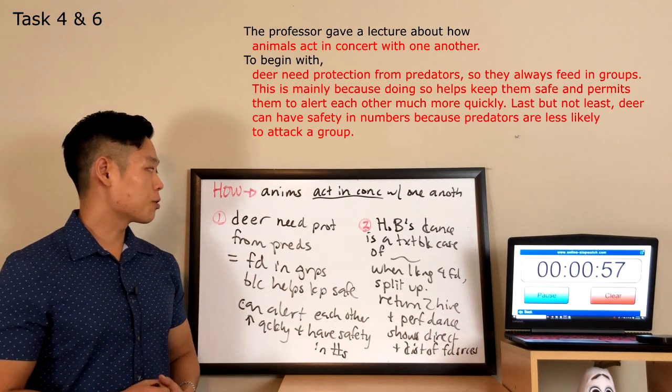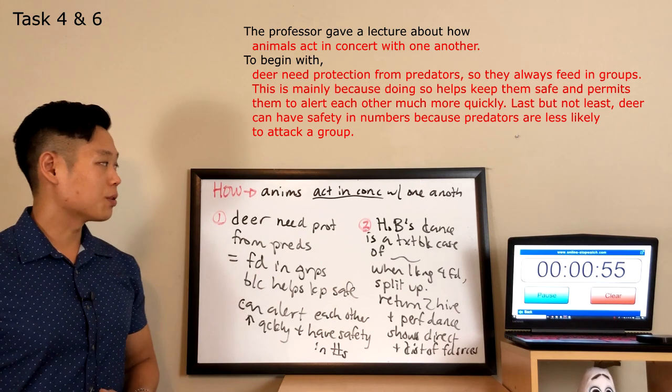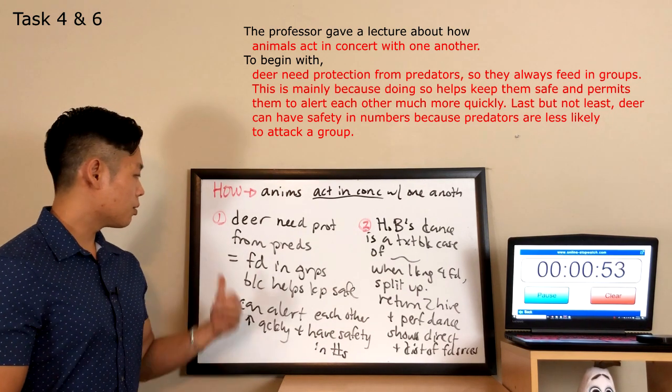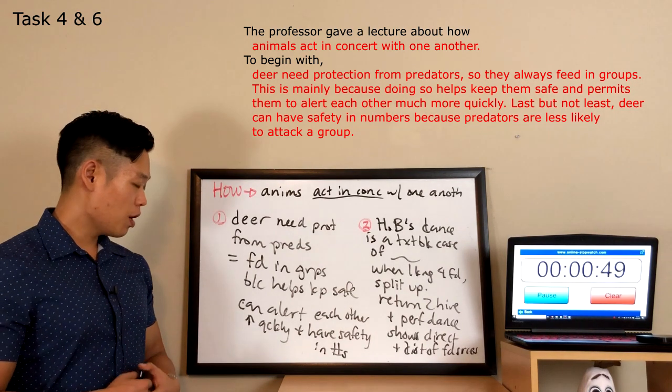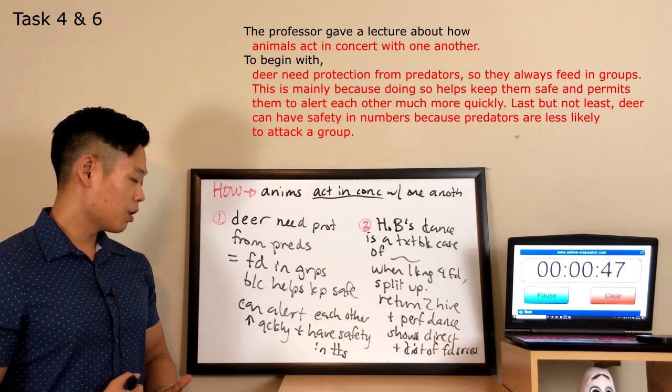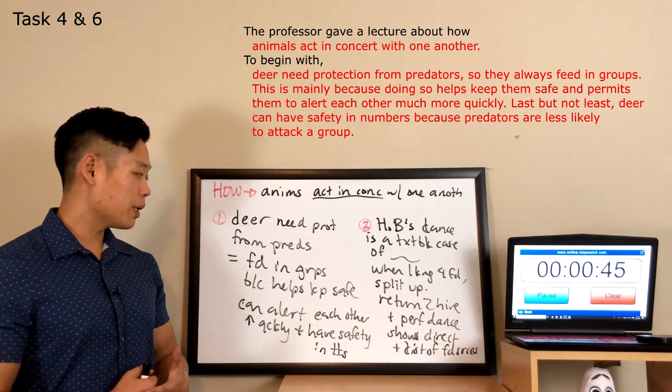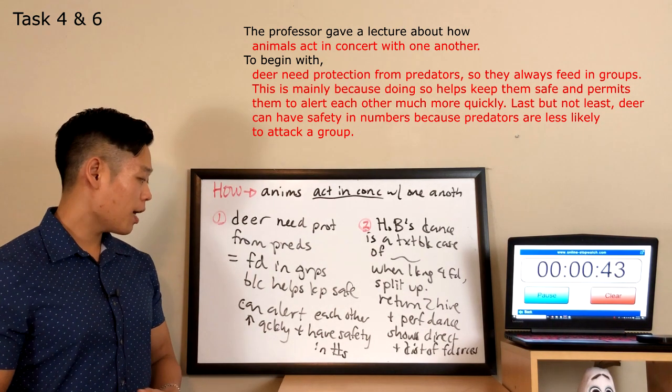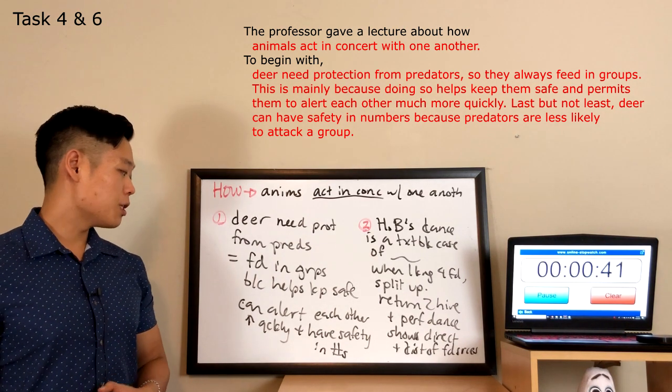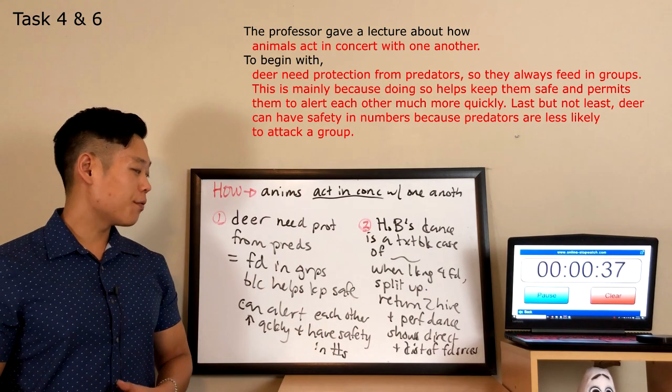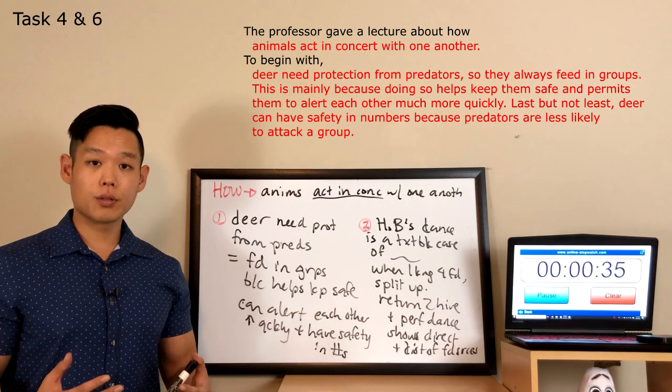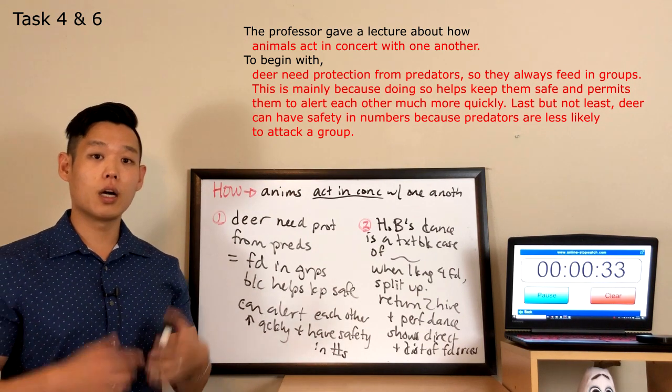The professor gave a lecture about how animals act in concert with one another. To begin with, deer need protection from predators, so they always feed in groups. This is mainly because doing so helps keep them safe and permits them to alert each other much more quickly. Last but not least, deer can have safety in numbers because predators are less likely to attack a group.